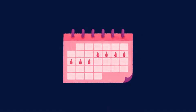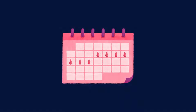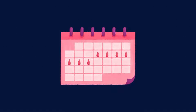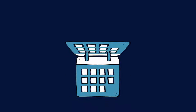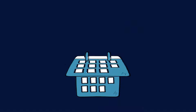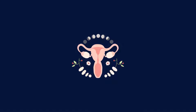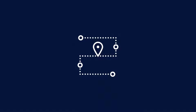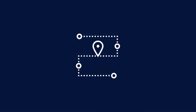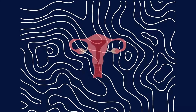Tracking BBT is a common method used to identify ovulation and determine a woman's fertile window. By recording BBT daily, women can identify the slight temperature increase after ovulation. A basal body temperature chart is a tool that helps women track their BBT and cervical mucus changes over time.